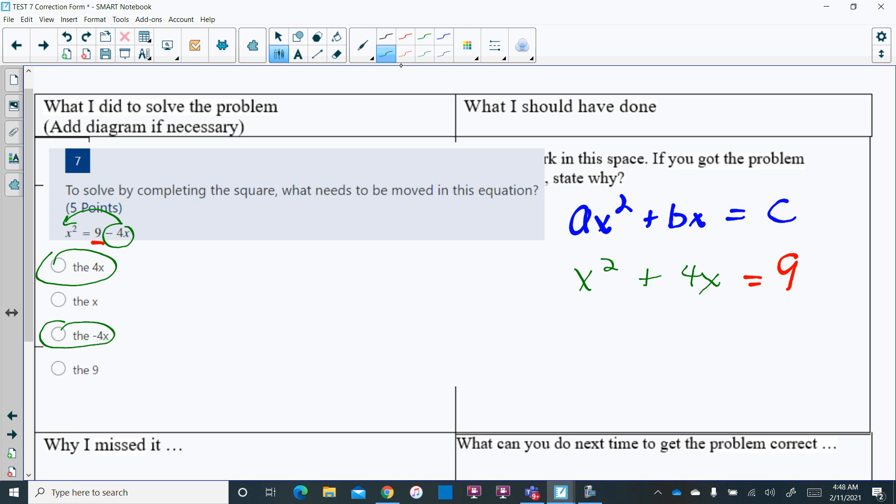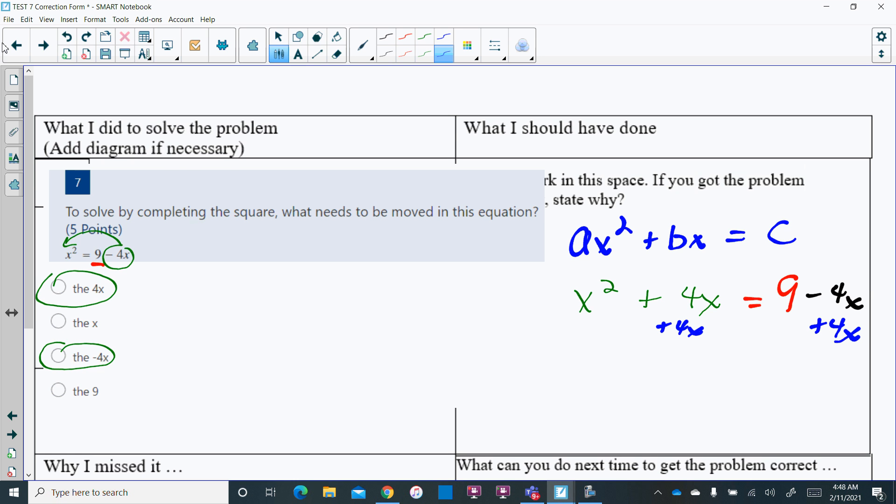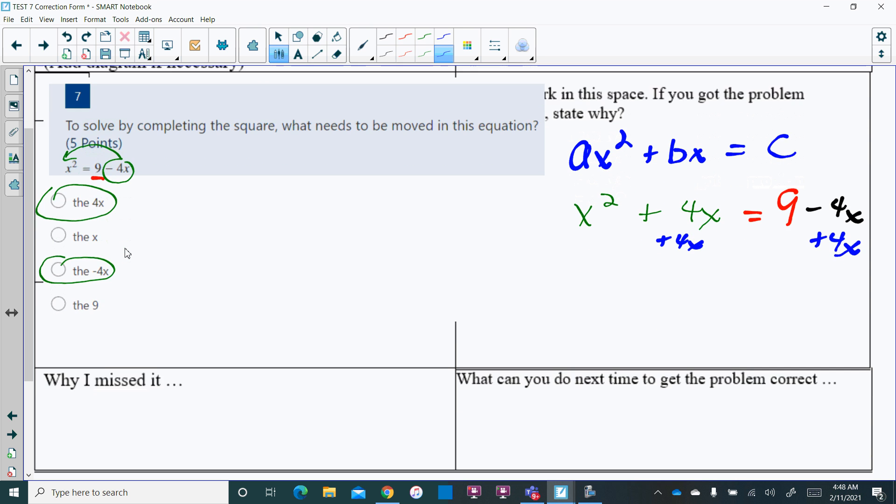I gave you points if you said the 4x, because maybe I took into consideration that maybe students, when they had the minus 4x, were thinking 'oh I need to do the inverse operation which was add the 4x on both sides.' So maybe I gave you points for that, but this is what needs to be moved, that's talking about the actual term. That was all we needed to do for completing the square on this section.